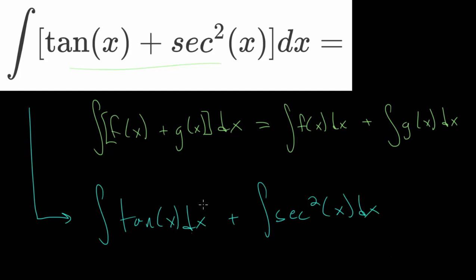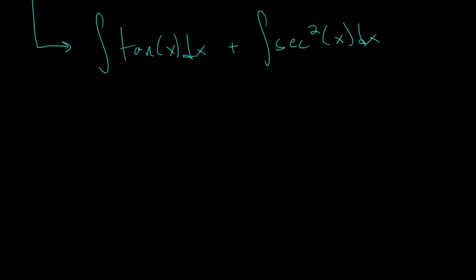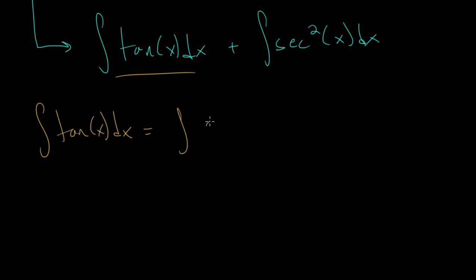Let's start with the integral of the tangent. Now when dealing with trig functions, one thing you can do is rewrite them in terms of sine and cosine. We just need to remember that the tangent function can be defined as the sine function divided by the cosine function. So we can rewrite the integral of the tangent of x dx as the integral of the sine of x divided by the cosine of x dx. When rewriting it like this, it might be a little bit more clear the path to take.